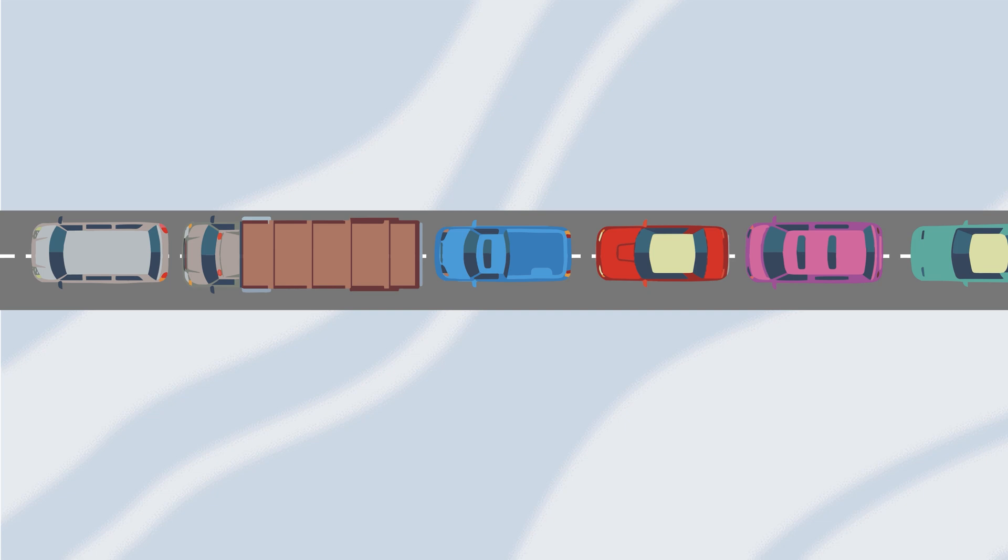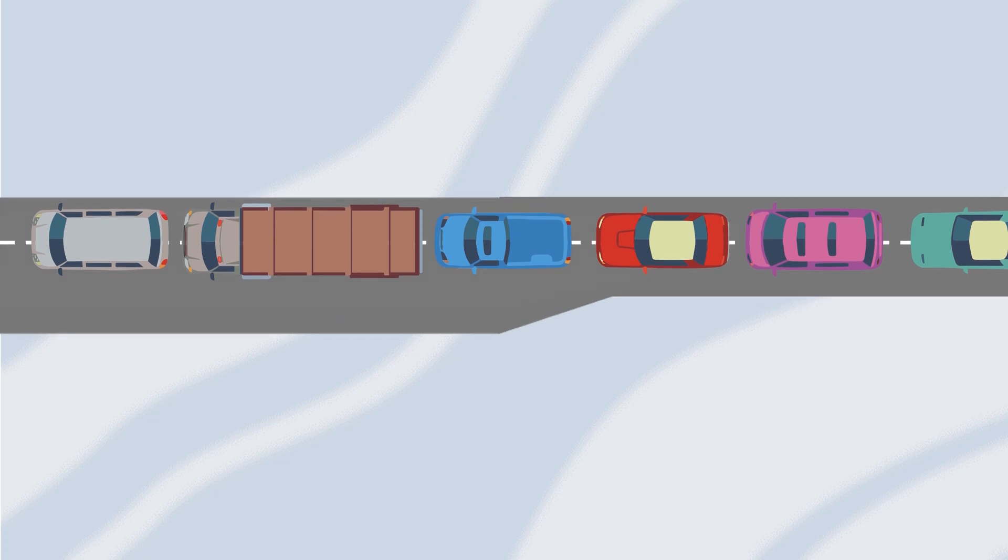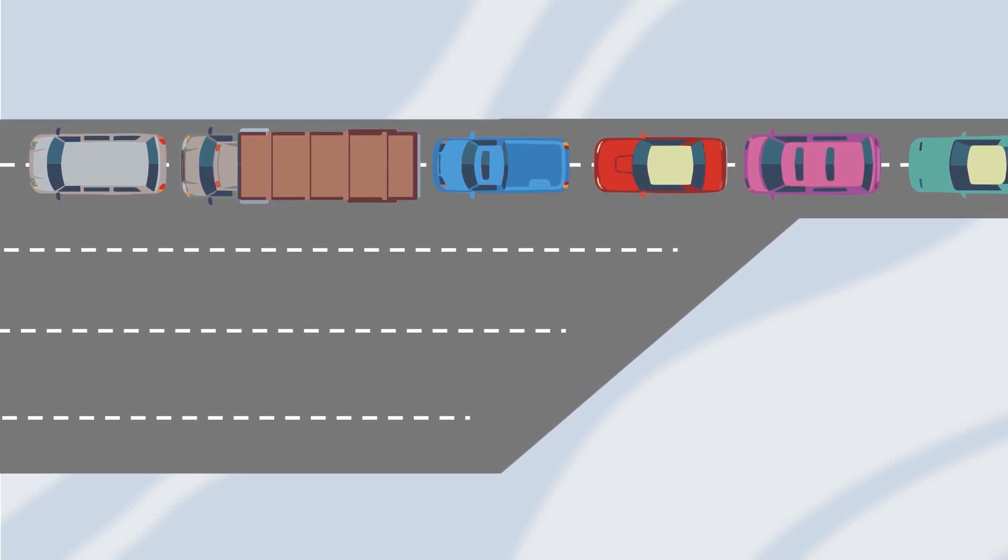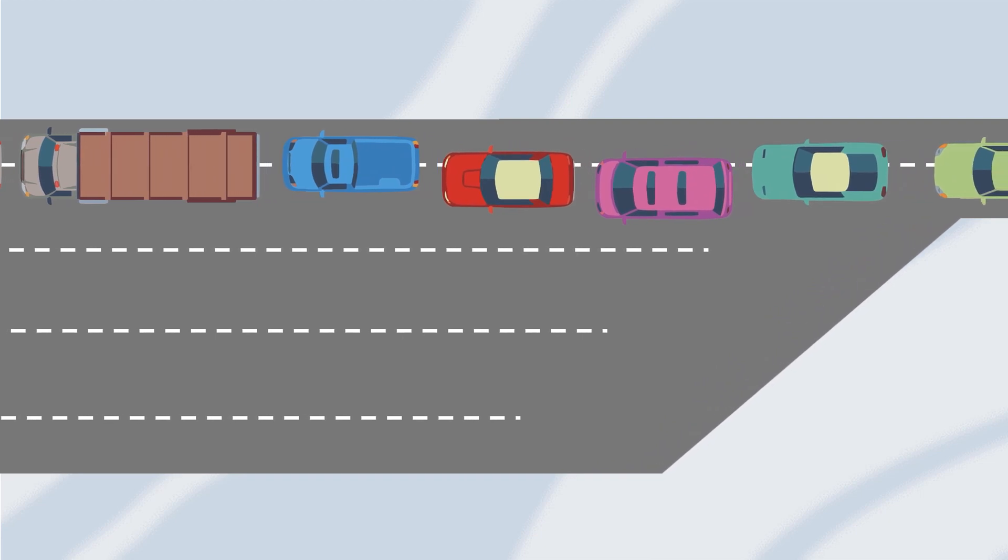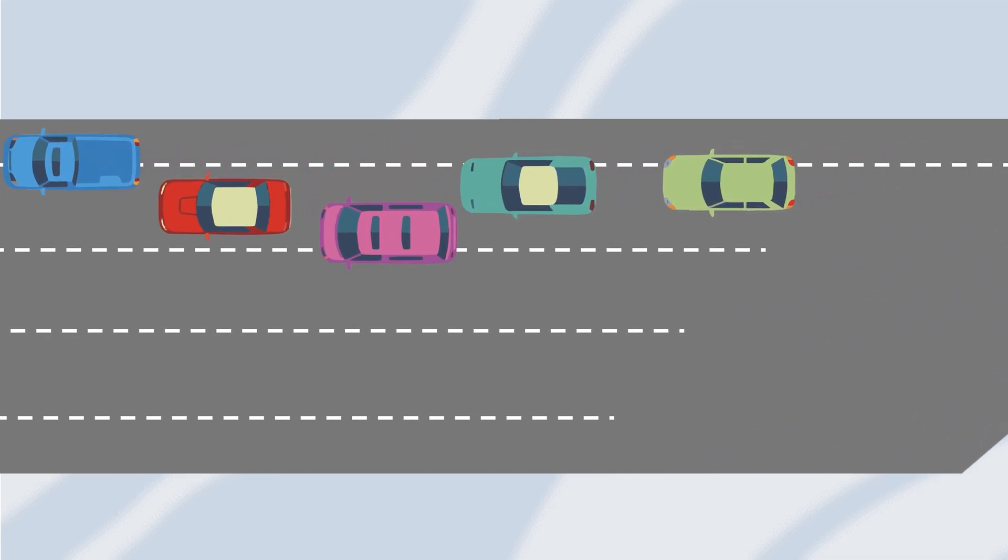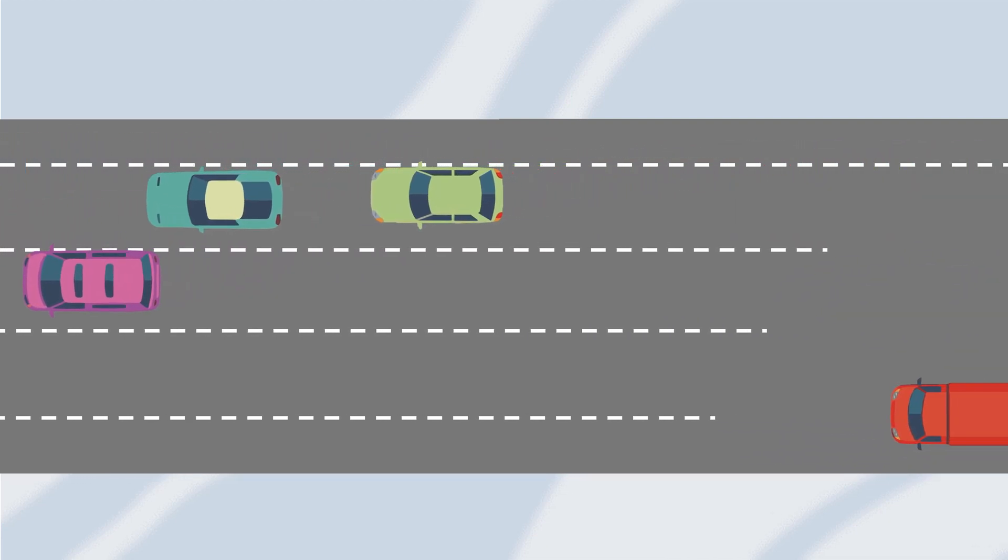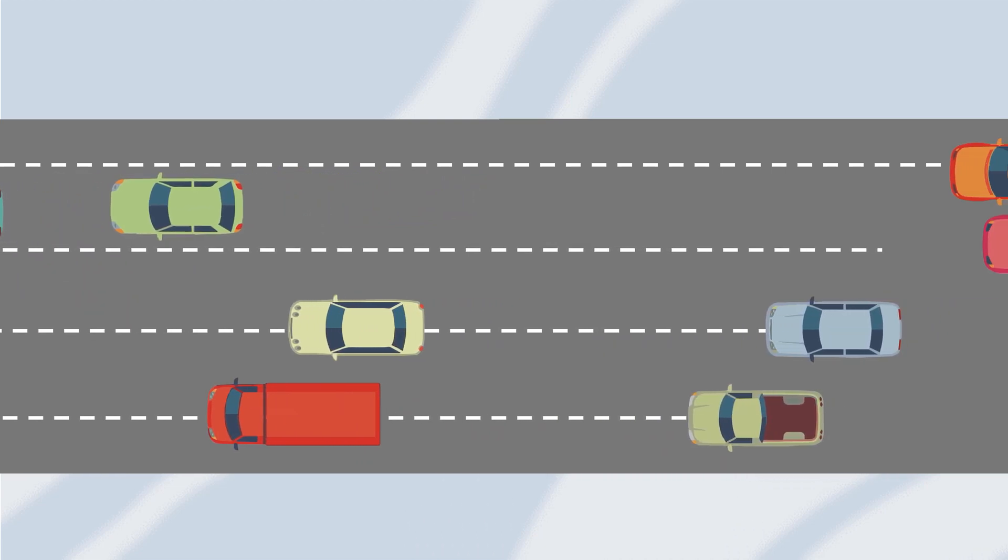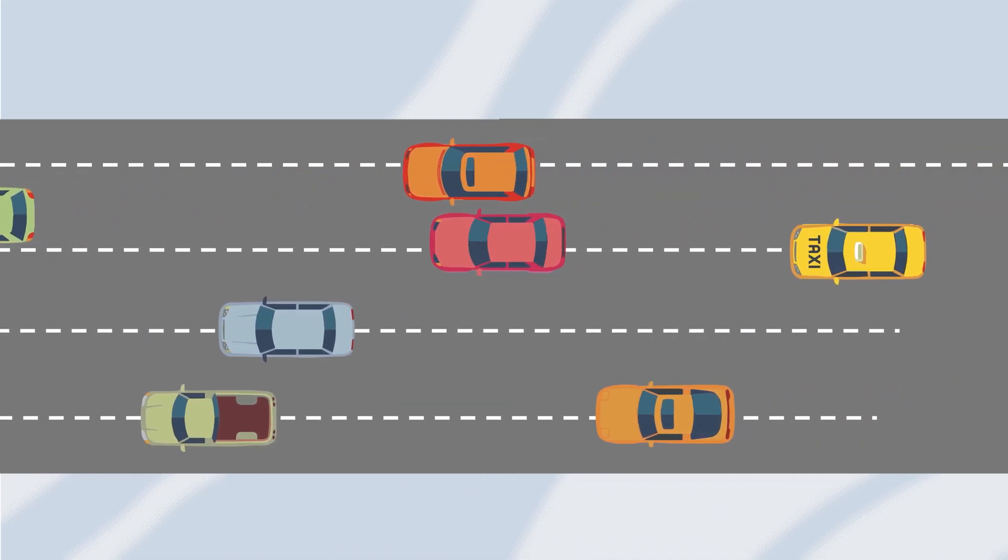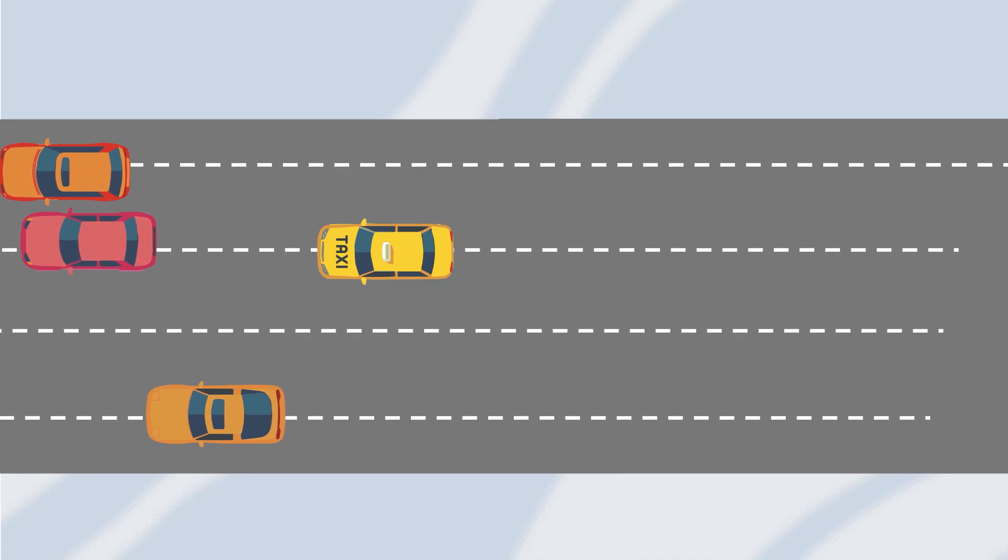However, if the number of lanes increases to five, then the flow will become much easier. In this case, permeability is a measure of the ease with which the cars flow on the highway. Higher permeability means easier flow, which in this case will happen with the five-lane highway.